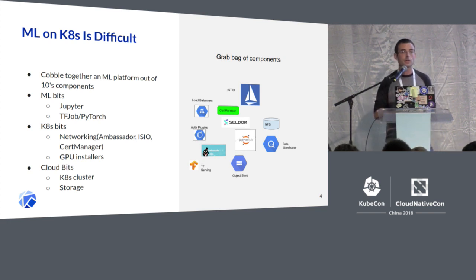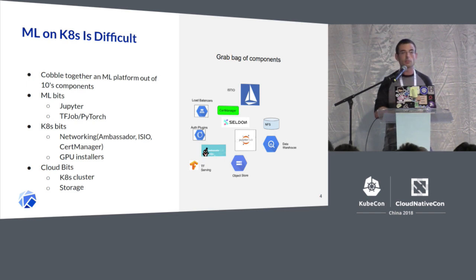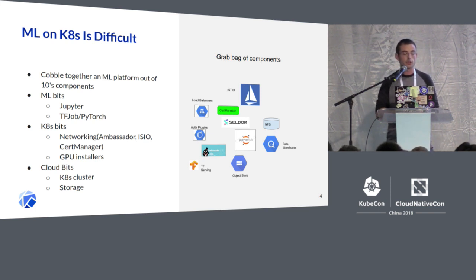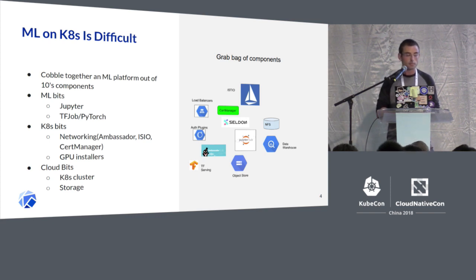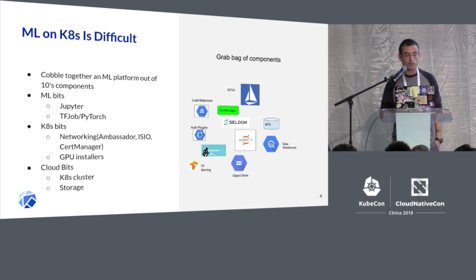The next level of components are Kubernetes-specific components, such as networking components. A lot of the applications you're deploying as part of your machine learning platform are web apps — for example, TensorBoard, a web application that makes it easier to monitor the performance of your models as you train them. To connect to these web apps, you need to set up networking, like a reverse proxy or ingress. You might also need to install GPU drivers to properly configure your cluster to use accelerators. And then finally, you have the cluster infrastructure-level pieces, like actually setting up your cluster or provisioning storage.